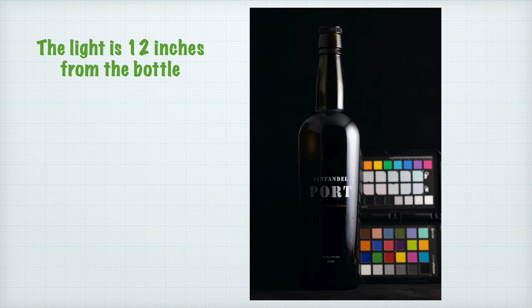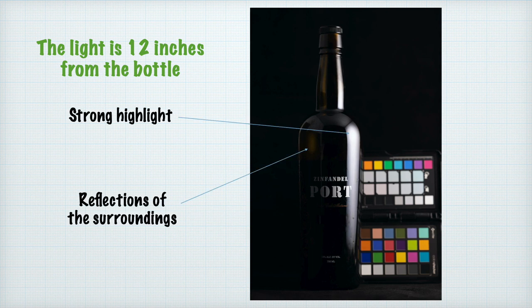My light is a softbox at camera right that is about 12 inches away from the bottle. This gives a strong bright highlight on the side of the bottle, and we can see reflections of elements of the environment. The other surfaces surrounding the bottle become secondary light sources which fill in the shadows and reflect in the glass surface.